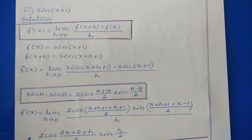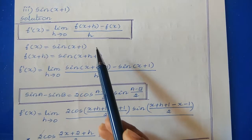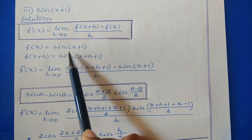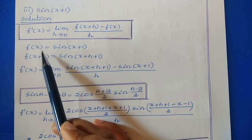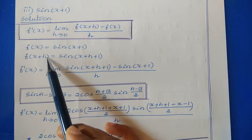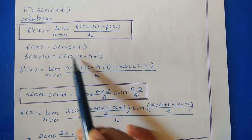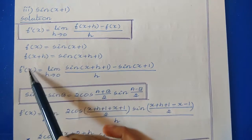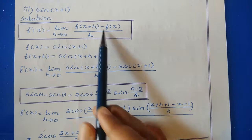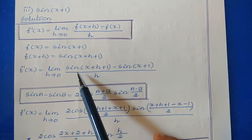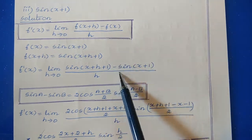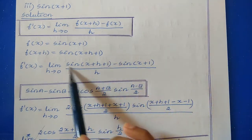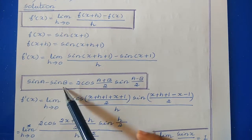Third sub-question: sin(x+1). Let f(x) equal to sin(x+1). Find f(x+h) by replacing x with x+h, so f(x+h) equals sin(x+h+1). Putting these two values in the formula: f'(x) equals limit h tends to 0, sin(x+h+1) minus sin(x+1), divided by h. To solve this, we use the formula sin A minus sin B equals 2 cos((A+B)/2) times sin((A-B)/2).